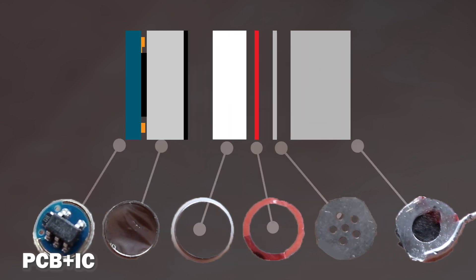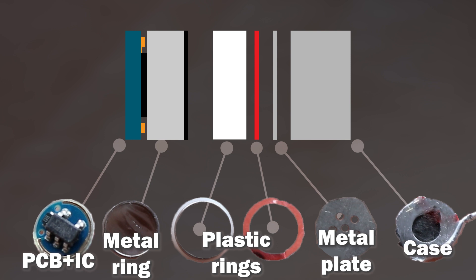The sensor consists of several parts: PCB with control IC, metalized ring with a membrane, two isolative rings which isolate the metalized ring from other parts, metal plate and sensor case.